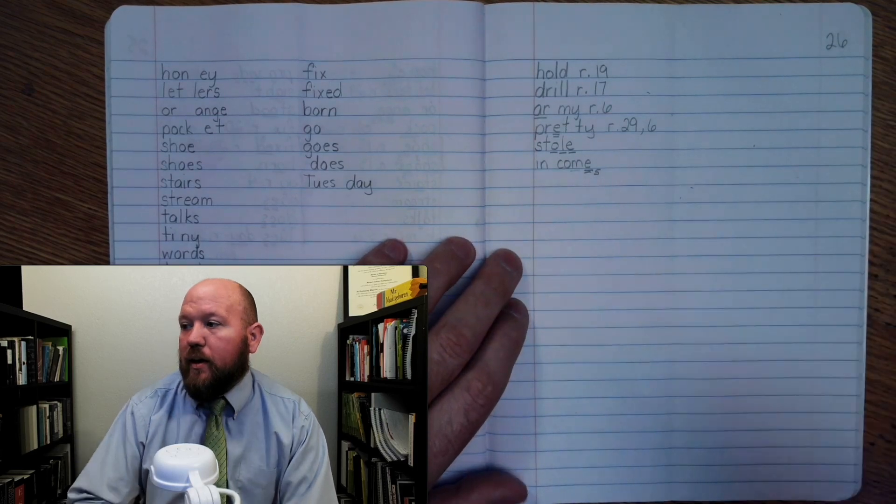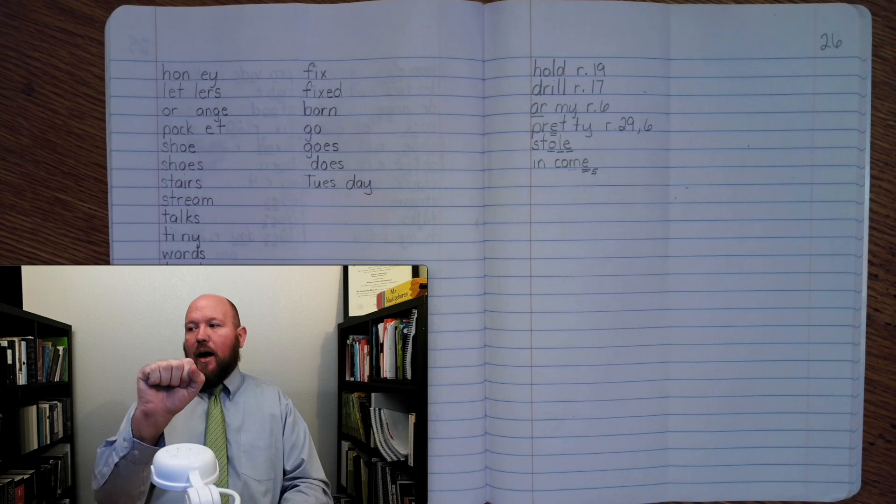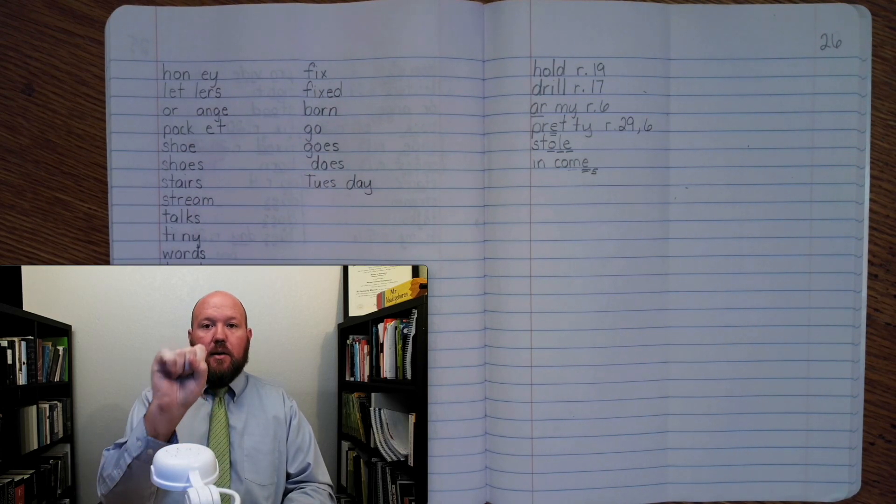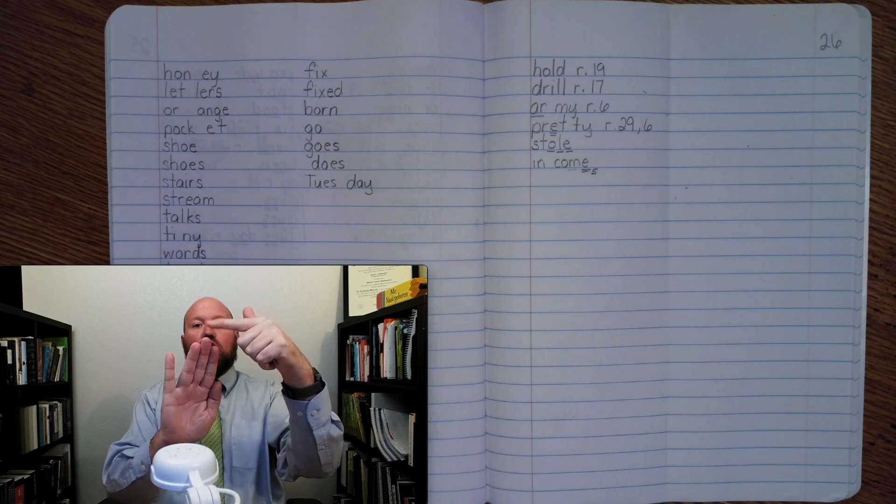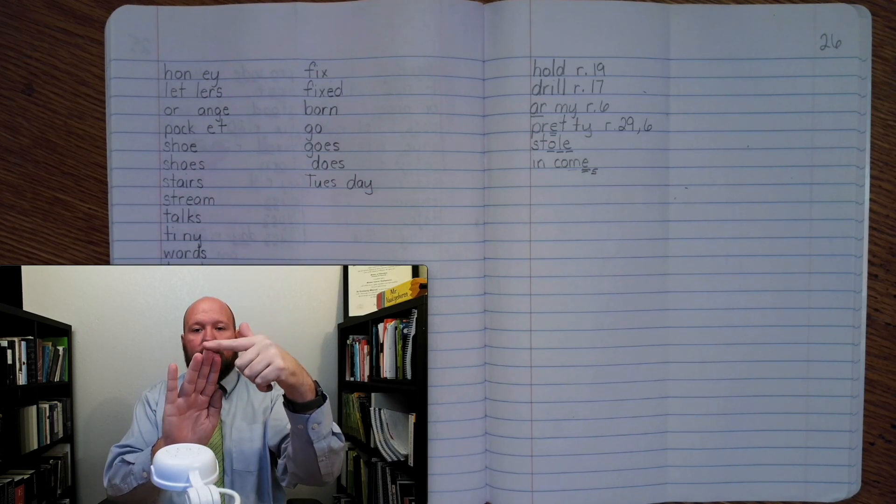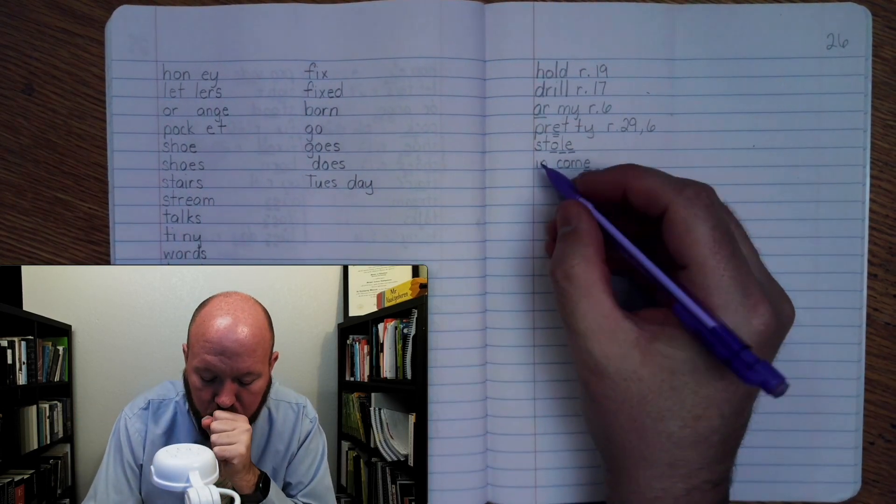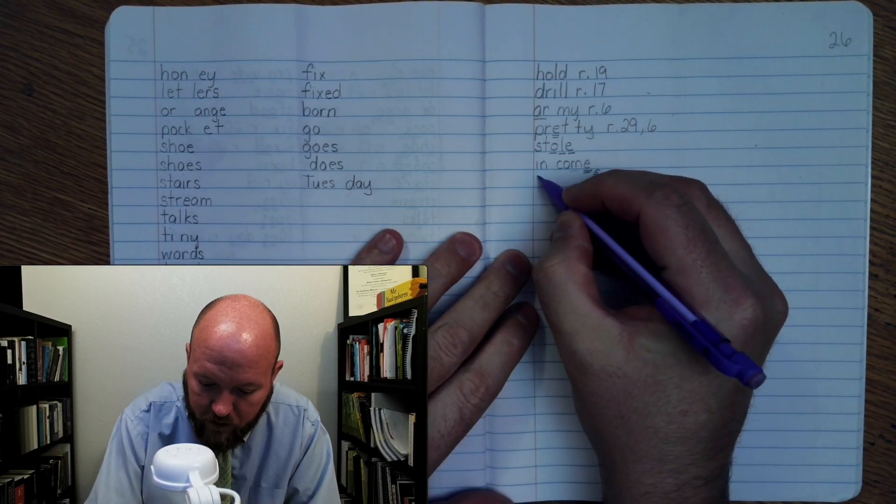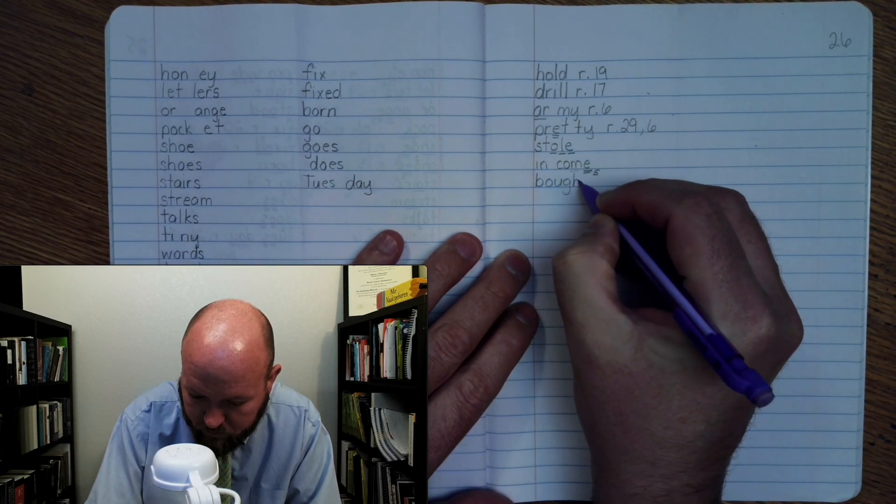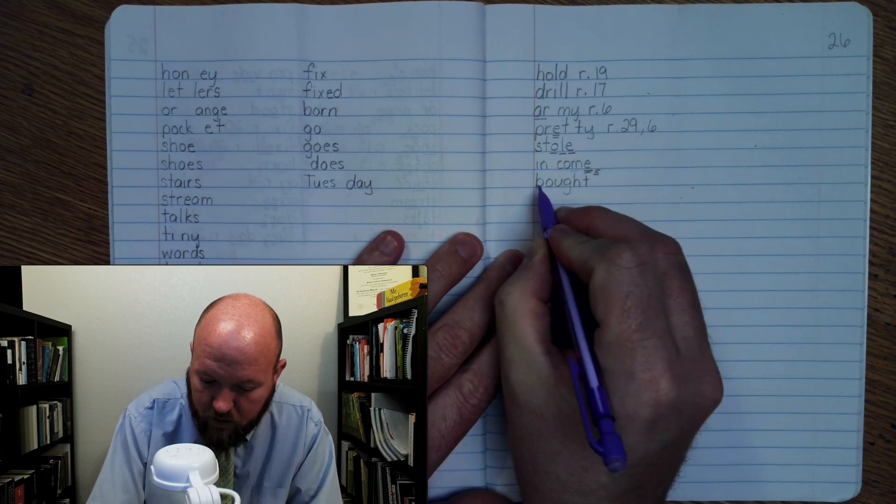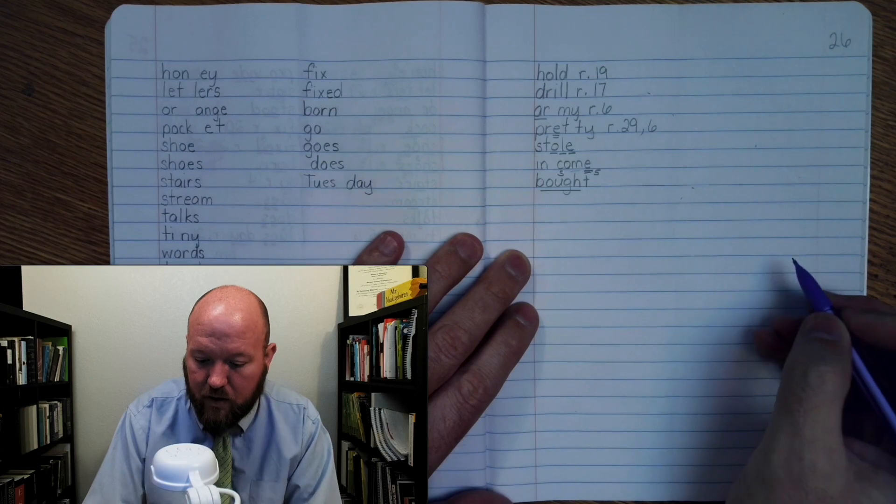The next word is bought, like 'he bought a new pair of shoes.' Base word bought: B-O-U-G-H-T. Here we're using our O-U-G-H making the 'aw' sound—the fifth sound this phonogram can make. Write it: B-O-U-G-H-T. For markings: B, O-U-G-H once (fifth sound), T. Bought.